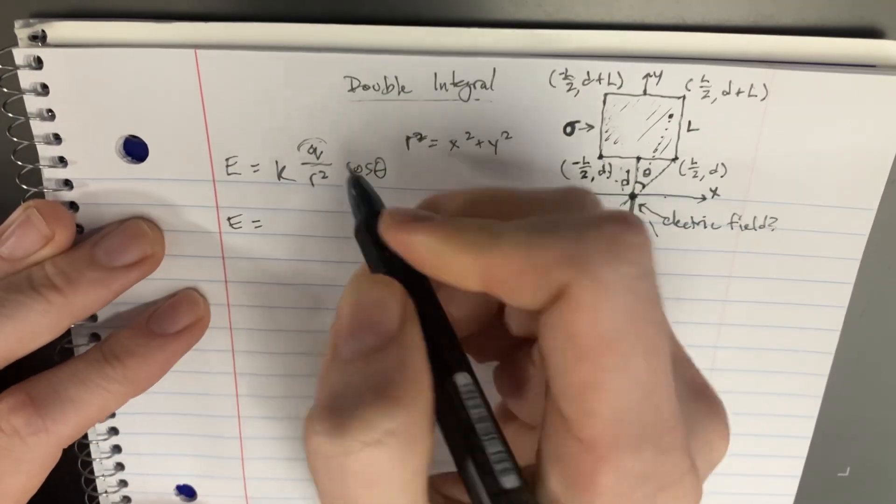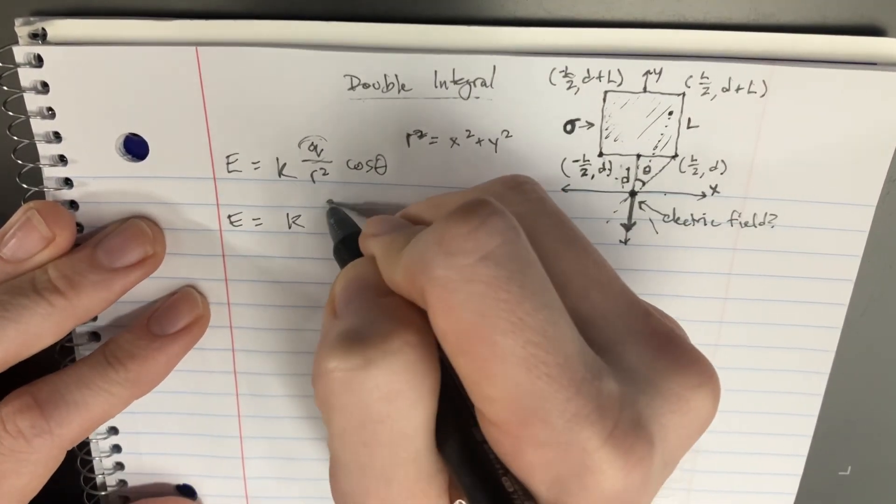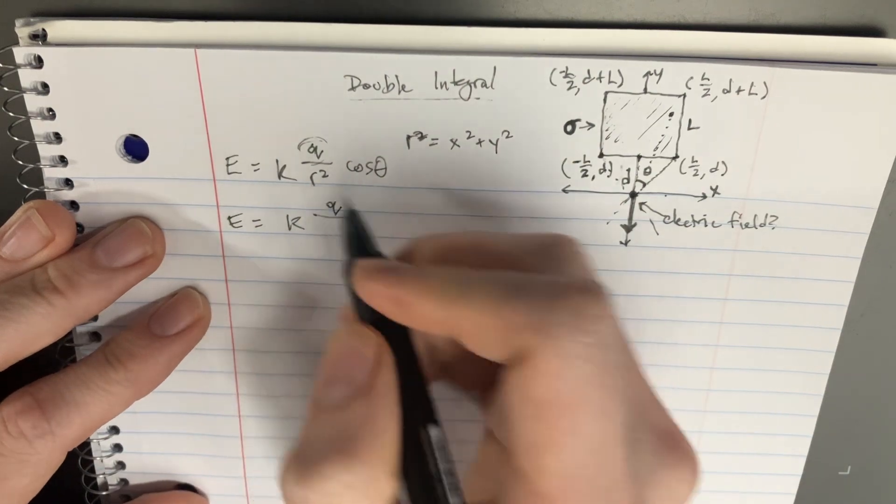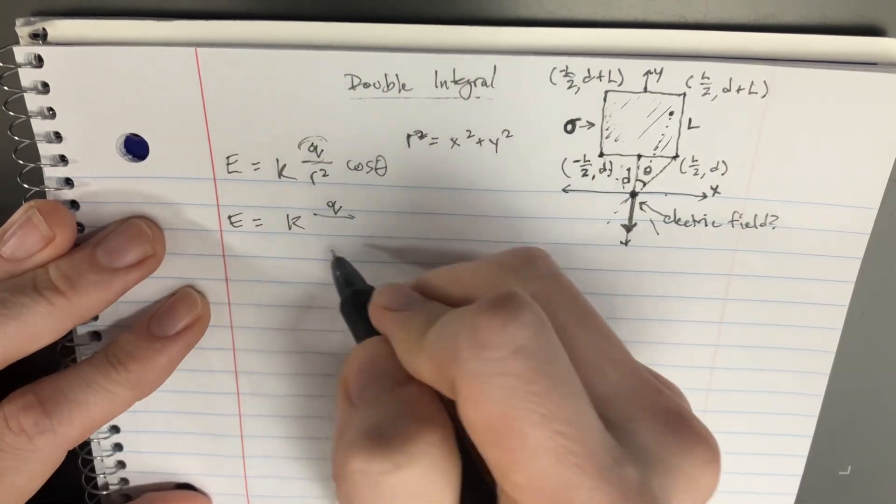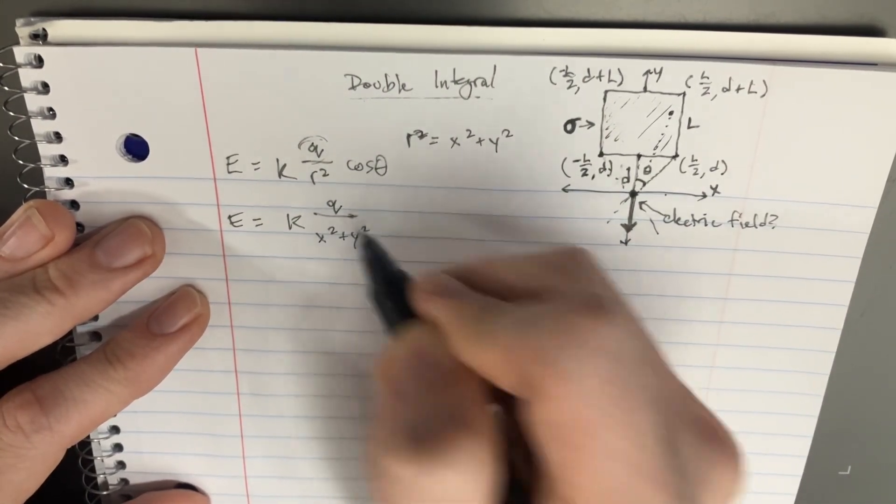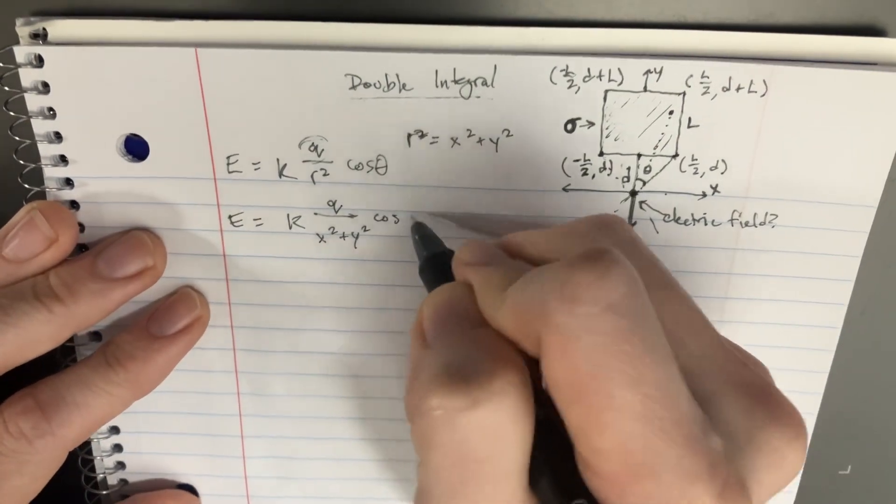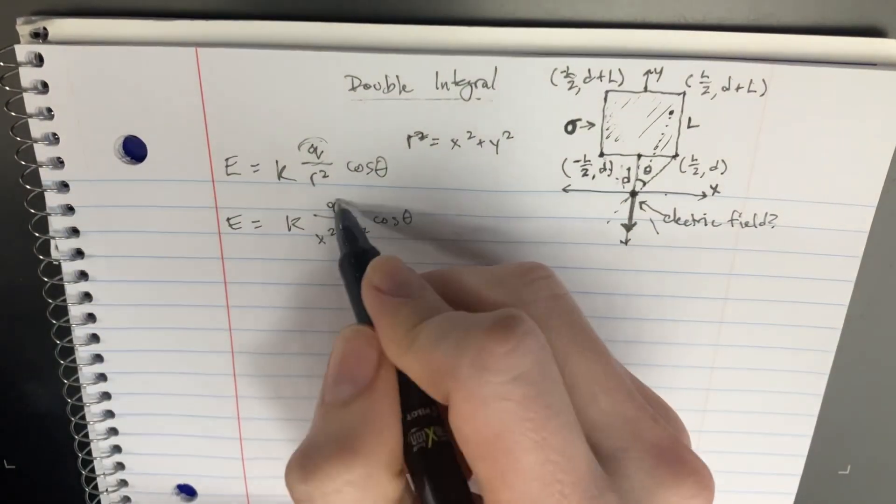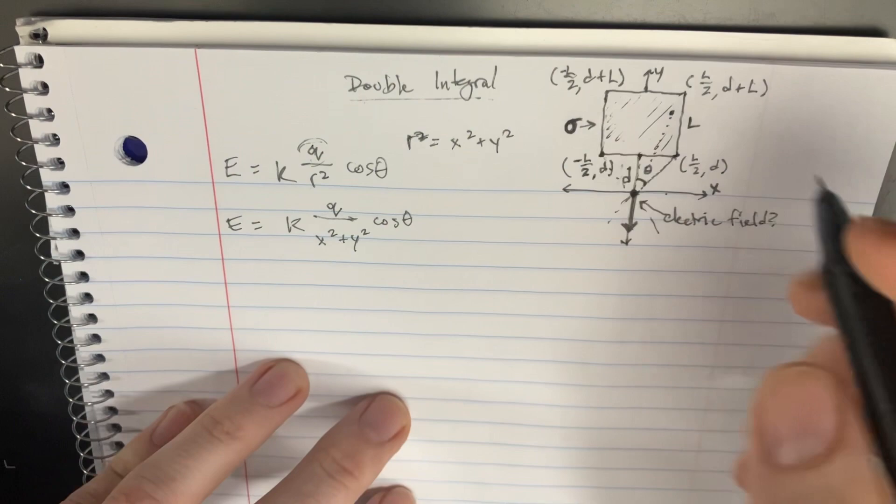So let's start filling in some of these equations, things that we have. We'll leave it as q right now for there. But then on the bottom, we have x squared plus y squared. And then there's still the cosine of theta, which we'll deal with in just a second. But the q, we can now think about that.